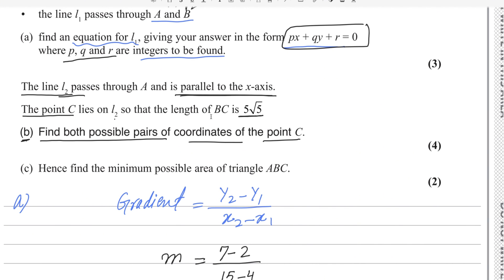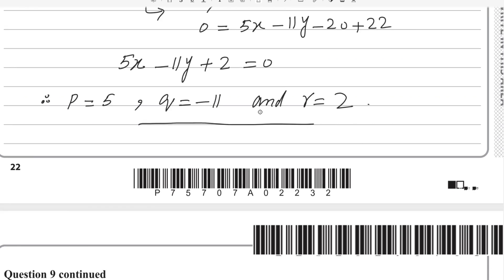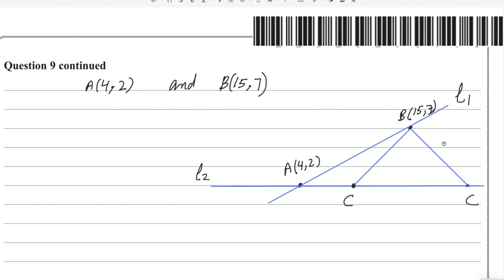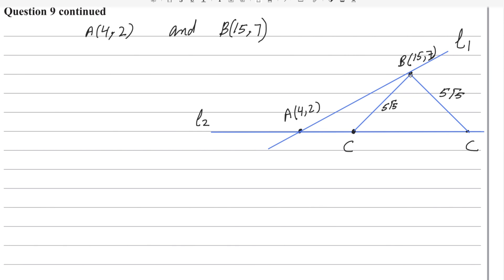Draw a perpendicular from point B down to line L2 — this meets L2 at point D. Since B is at (15, 7) and L2 is at height y = 2, point D has coordinates (15, 2). The height BD is the difference in y-coordinates: 7 minus 2 equals 5.